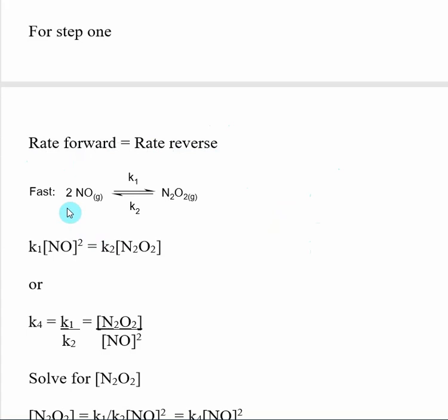This is, once again, an elementary process. So the rate going forward, I can use the stoichiometry to come up with a rate law expression for it. K1, that's our forward reaction, times the concentration of my reactants, and raised to the stoichiometric coefficient. So this two is this two here.